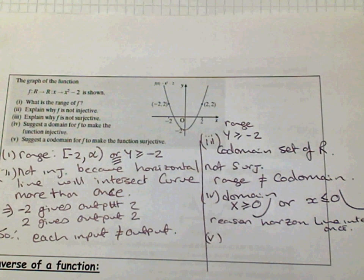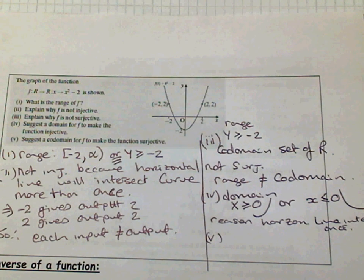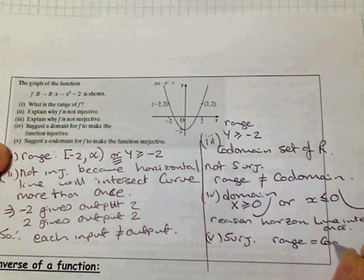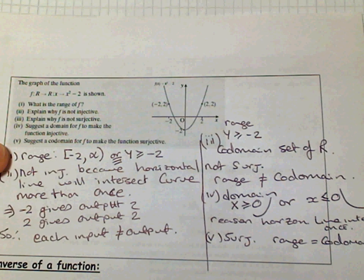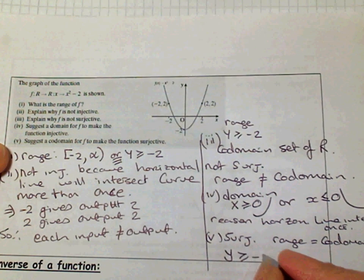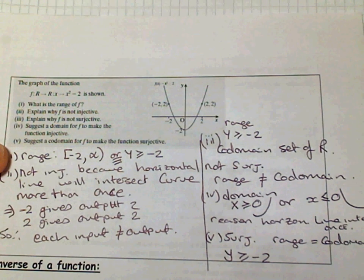Part five: suggest a co-domain for F to make the function surjective. Remember that to be surjective the range must equal the co-domain. The co-domain was the set of real numbers, so if you restrict the co-domain to just Y values greater than or equal to minus two, then the range equals the co-domain, and therefore it would be a surjective function.